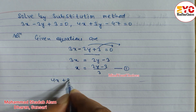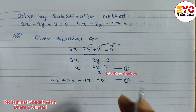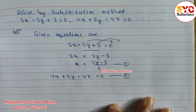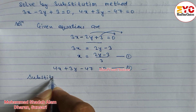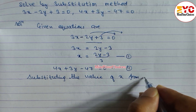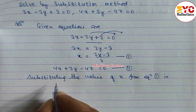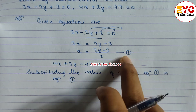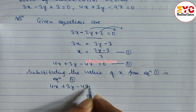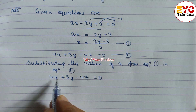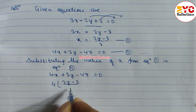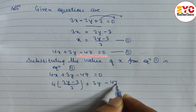Now write equation 2: 4x plus 3y minus 47 is equal to 0. We substitute the value of x from equation 1 into equation 2. So we get: 4 times (2y minus 3) divided by 3, plus 3y minus 47, is equal to 0.